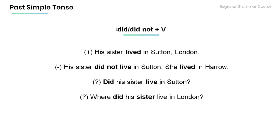Now let's have a look at the use of did or did not plus verb. Starting with the positive sentence: 'His sister lived in Sutton, London.' The negative form would be: 'His sister did not live in Sutton. She lived in Harrow.' The question form would be: 'Did his sister live in Sutton?' or 'Where did his sister live in London?'